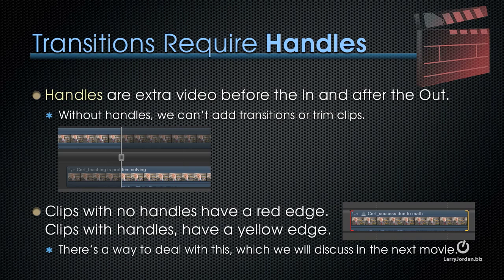Transitions require handles. Handles are extra video before the in and after the out. We can see that here in this illustration on the top left side. That part of the clip that's a lighter color is what we see inside the timeline as our project plays back. That which is dim on the top row is handles after the out. That which is dim on the bottom row is handles before the in. When we highlight an edit point, if it has no handle, the edge is red. And if it does have a handle, the edge is yellow, as you can see in this illustration here.